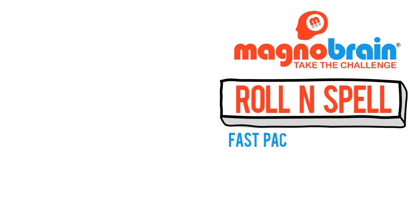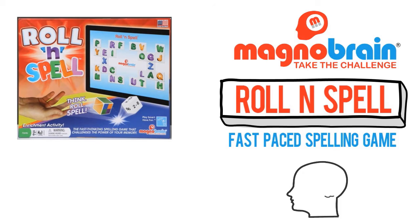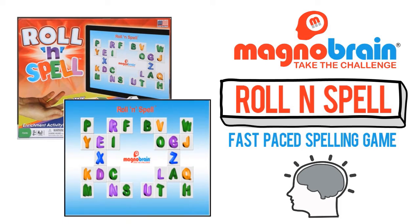Magno Brain's Roll and Spell is a fast-paced spelling game that allows competitors to challenge their memory, vocabulary, and spelling skills by spelling words that can give them the maximum number of points.